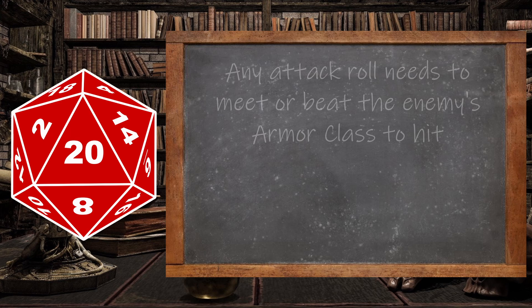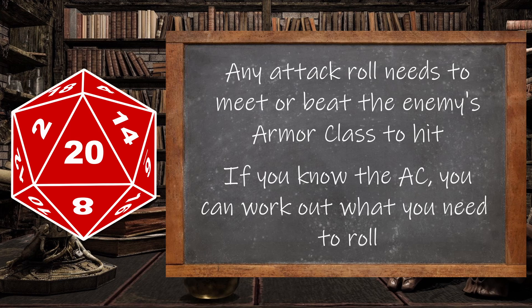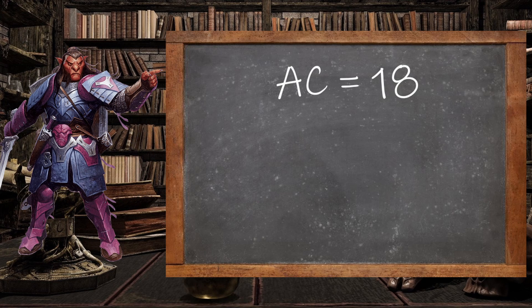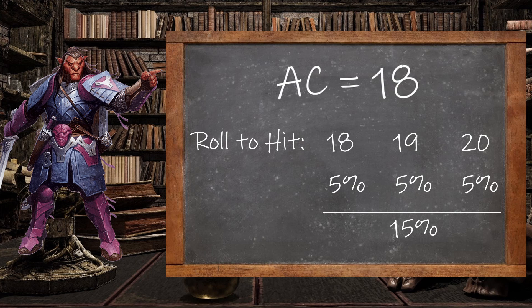When it comes to combat, a successful weapon or spell attack roll needs to meet or beat the enemy's armor class to succeed. So long as you know a target's armor class, you can work out what numbers you need to roll to hit them. If you add up the percent to hit for each number you need to roll, you'll be able to calculate your percentage chance to hit for that specific monster. For example, this hobgoblin has an armor class of 18 due to wearing chain mail and wielding a shield. To hit a hobgoblin, you'd have to roll an 18, a 19, or a natural 20. If each dice roll has a 5% chance of happening and there are three total rolls that result in a hit, 5 plus 5 plus 5 equals 15. Thus, you have a 15% chance of hitting a hobgoblin with an armor class of 18.